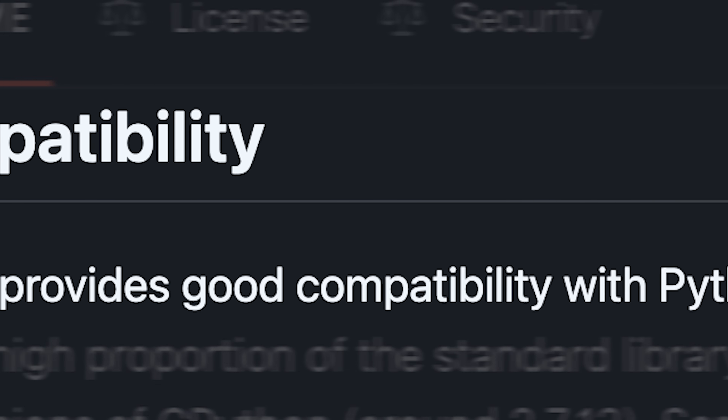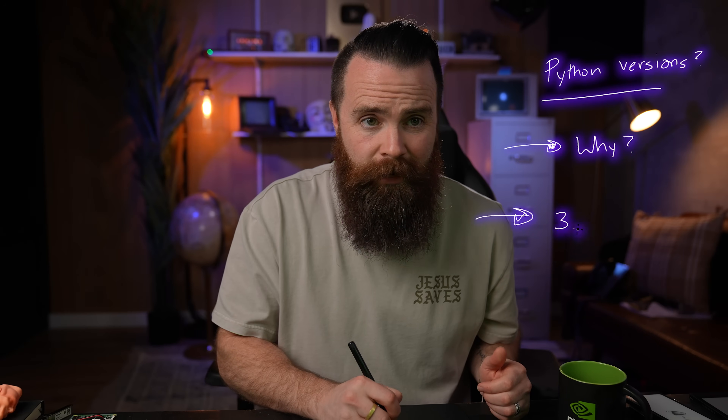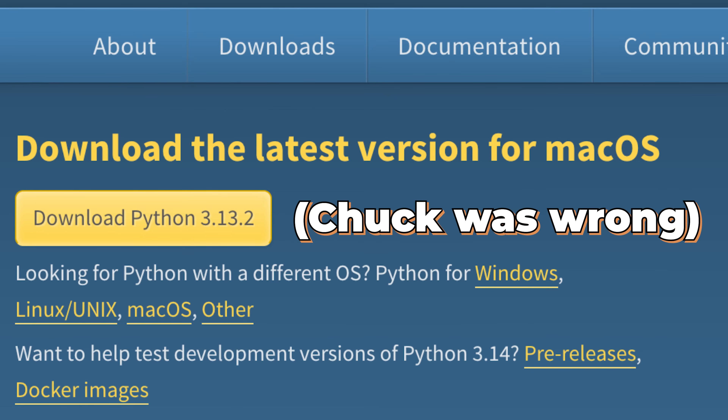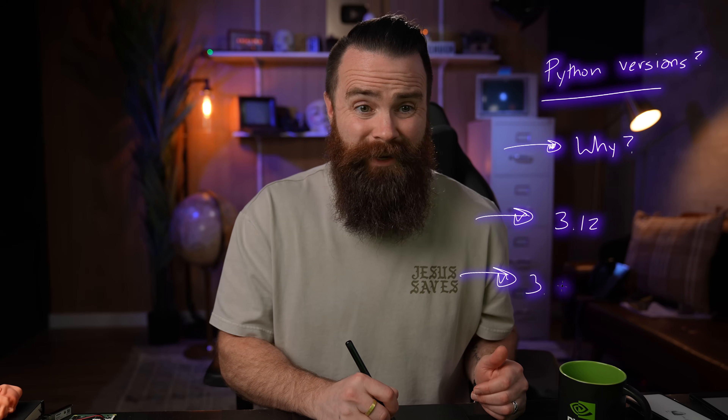The first thing you might wonder is: why do you need multiple versions of Python? Wouldn't it make sense just to have the latest and greatest installed? In a lot of cases, yes, but some projects only support earlier versions of Python. As they update Python, they're adding new things and changing syntax. So you might have Python 3.12 installed, but then be working with a tool coded in Python 3.10, and suddenly things don't work. You're tearing your hair out — and that sucks.